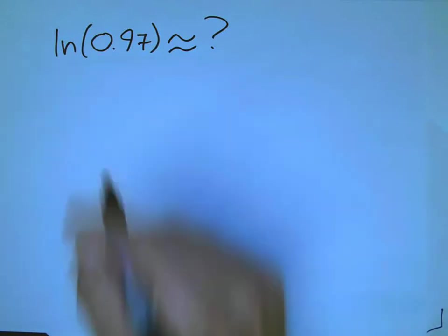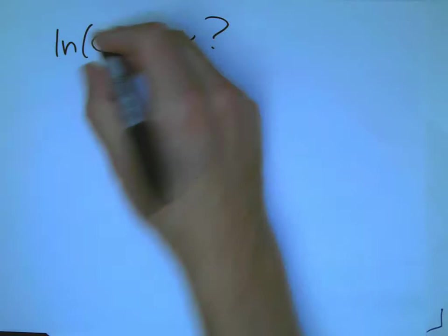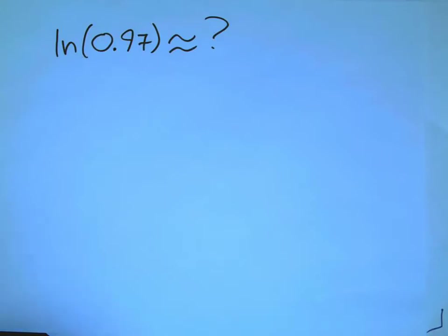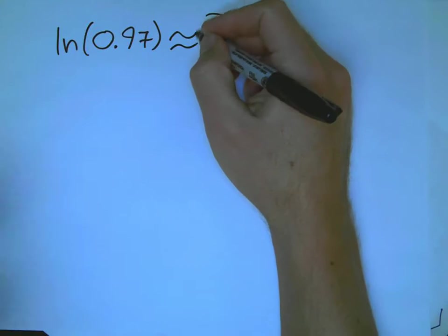Of course, the point is not really so much to get this number. That's something we could get out of our calculator. The point is to use this as a jumping off place for really getting a better understanding of what derivatives tell us and, in particular, how to interpret them as a mechanism for doing linear approximations. We're going to do more interesting examples later, but this is a good place to start.